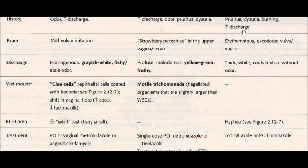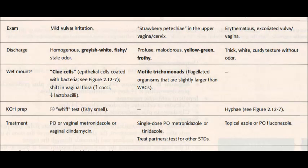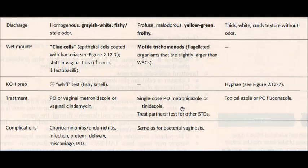On exam, trichomonas classically shows a strawberry appearance of the upper vagina and cervix. For yeast, there will be redness — an erythematous, excoriated vulva or vagina. Regarding discharge: for bacterial vaginosis, it is homogeneous, grayish-white with a fishy odor. For trichomonas, remember yellow-green, frothy, and profuse.